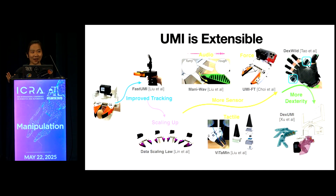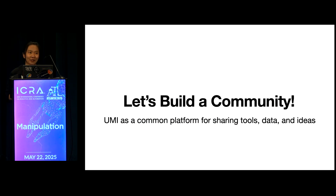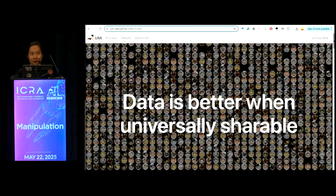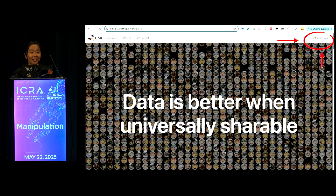Taking a step back, one exciting thing about this work is that a lot of contributions come from researchers and students outside my own lab — and that is exactly what we're trying to build: a community with a shared common platform so we can share tools, ideas, and data to make progress together. As part of this effort, we recently launched the UMI data website, a centralized hub for UMI-related data. If you're working on something related or have improvements to UMI, we highly encourage you to reach out so we can list your work and data there for others to use.